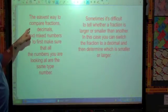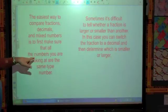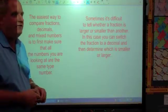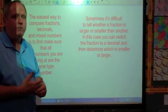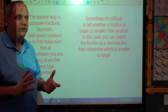The first thing, the easiest way to compare fractions, decimals, and mixed numbers is to first make sure that all of the numbers you're looking at are the same type of number. So for instance, if you have two numbers that are mixed numbers, and you have two numbers that are decimals, the easiest way to do that is either convert those two mixed numbers to decimals.